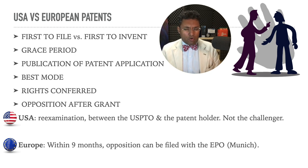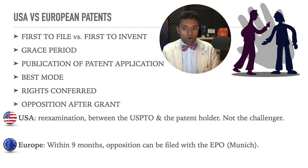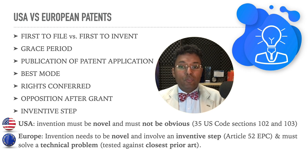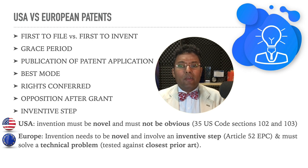If there is a challenger or a query about a patent that has already been filed, in the US it is a conversation between yourself or the patent holder and the United States patent office. While in Europe, it is a conversation that can only happen within the first nine months and it is between the patent holder, the challenger, and the European patent office based in Munich. In the US, when you apply for a patent, you need to demonstrate that the patent is novel and that it is not obvious. While in Europe, apart from it being novel, it also needs to have an inventive step and it needs to solve a problem.